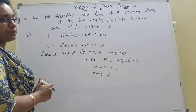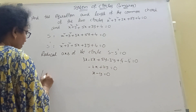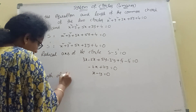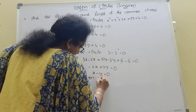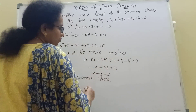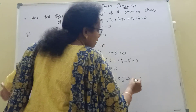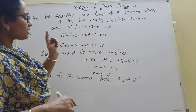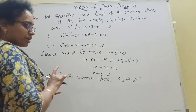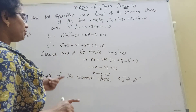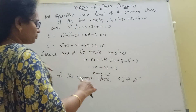Length of the common chord — what is the formula? Length of the common chord formula: 2 into root of r² minus d². Same formula, similar to chord length formula. 2 into root of r² minus d², and r² minus d². Here we have the first circle: x² + y² + 3x + 5y + 4 = 0.